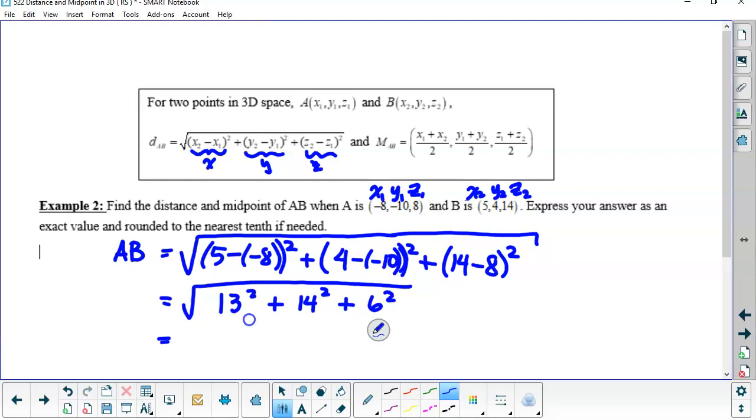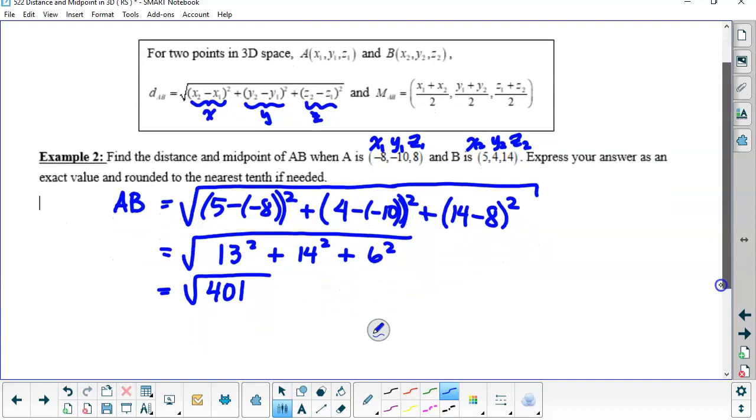I don't have a calculator on here. It's not an even number. 3 doesn't go into it. So I think you can simplify that. You can leave that. Decimal form of the value rounded to the nearest tenth is 20.0.